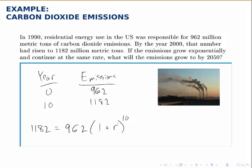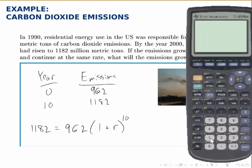To do so, I want to get r by itself and I start by dividing both sides by 962. Once I divide that out, I'll just have (1 + r) to the tenth on the right side. Dividing 1182 by 962, we get 1.228.